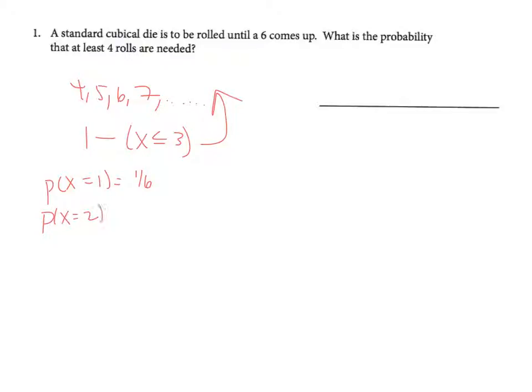The probability that x equals two means I don't roll a six, so that would be five out of six, and then I do roll a six, which is one sixth.